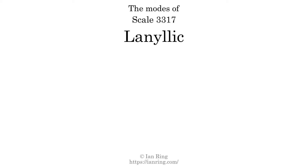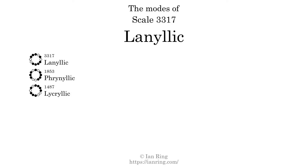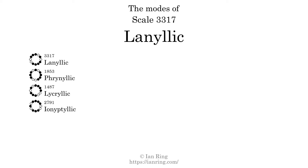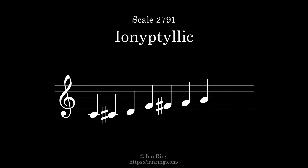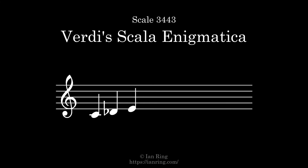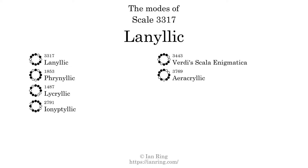This scale has 8 modes. The first mode is itself. The second mode is scale 1853, also known as Franilic. It sounds like this. The third mode is scale 1487, also known as Lacrylic. It sounds like this. The fifth mode is scale 3443, also known as Verdes Scala Enigmatica. It sounds like this. The sixth mode is scale 3769, also known as Lacrylic.